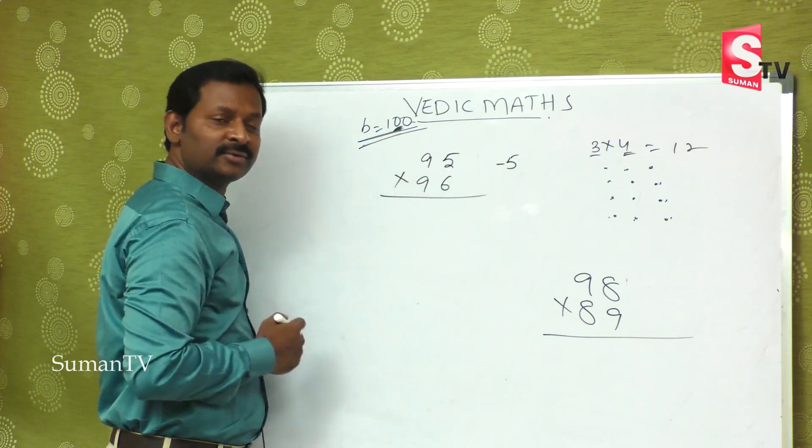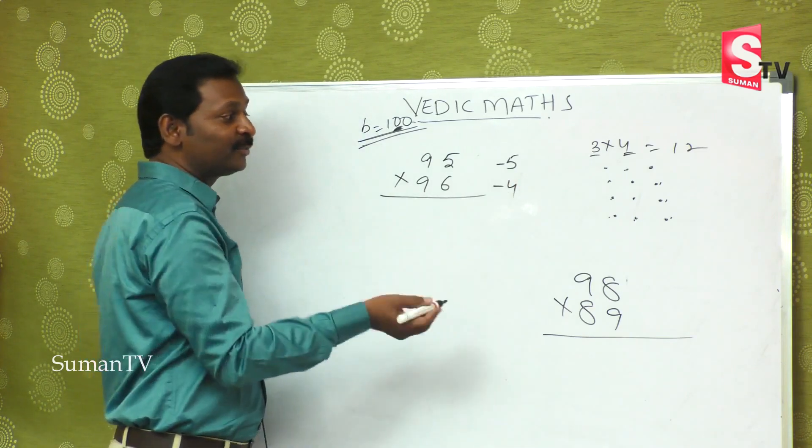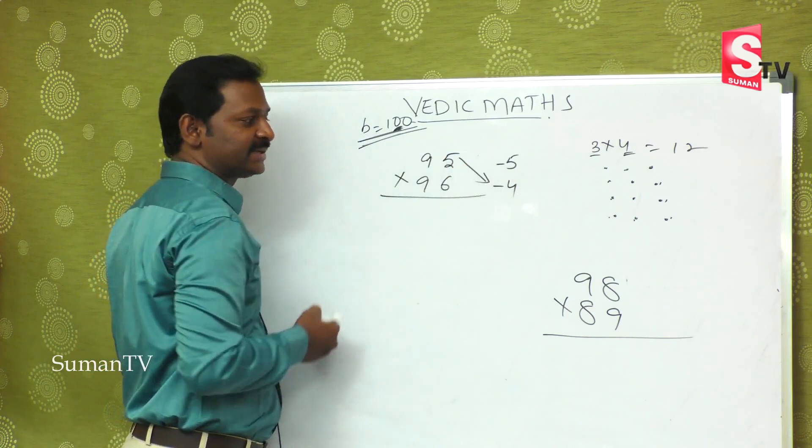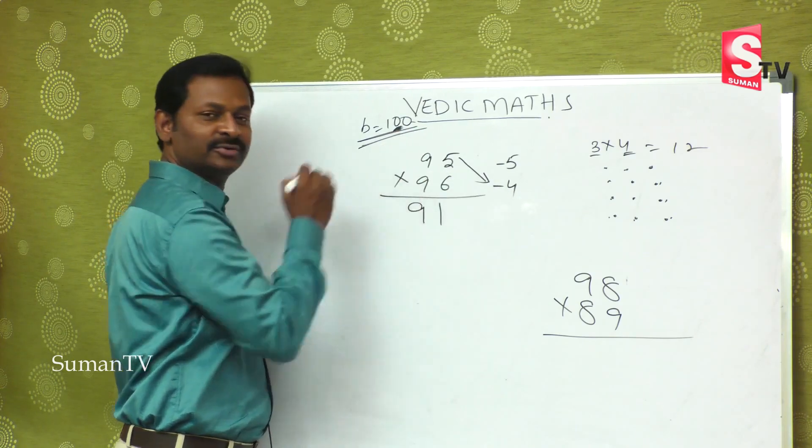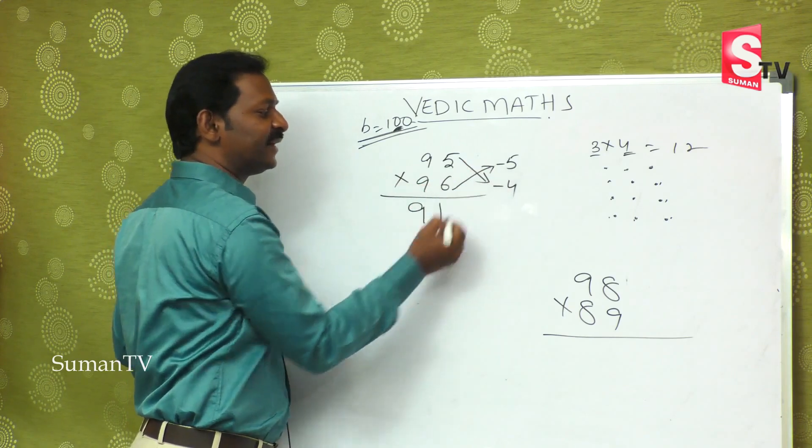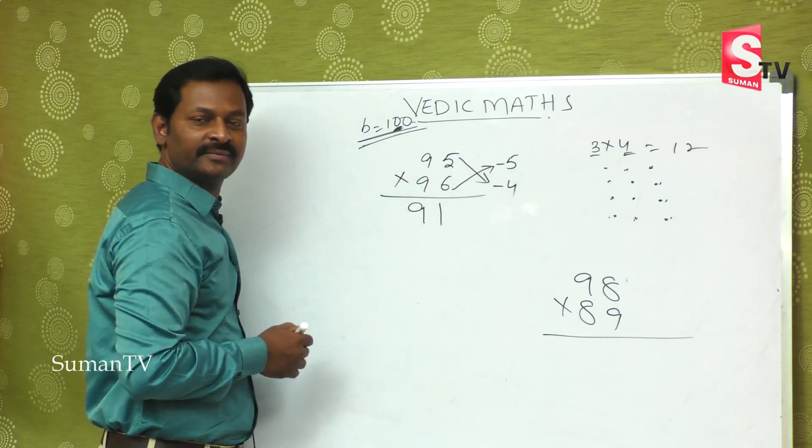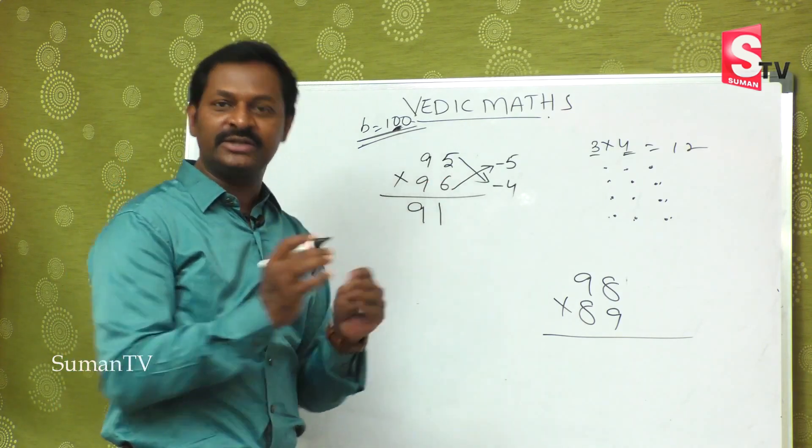It is less than 100. What is it? It is less than 4. So minus 4. In this method, the number is less than 5. 95 minus 4 is 91. 96 minus 5 is 91.